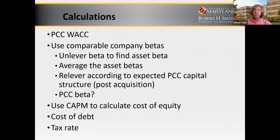Where are you going to find that information? Let's look at the case itself and see how we can use the data to lever and unlever betas. In Table 7, you're given a lot of information about comparable companies: revenue, EBITDA, net income — so you can calculate comparable multiple ratios.